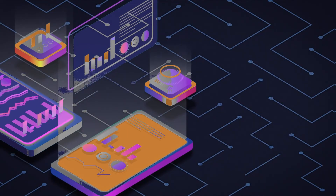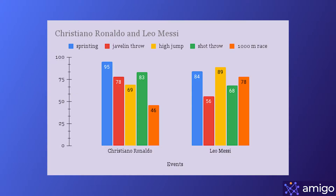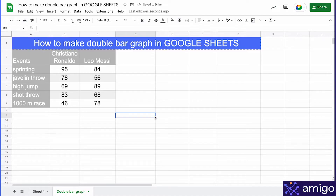Hello guys, in this video I'll show you how to visualize data using a double bar graph in Google Sheets. A double bar graph allows you to see two data sets from the same category on one chart.